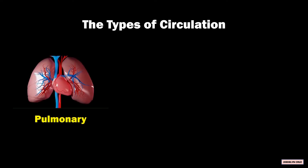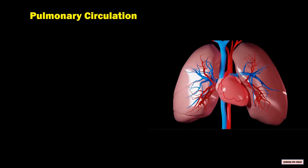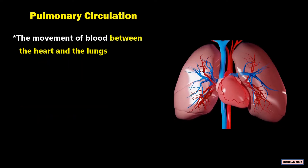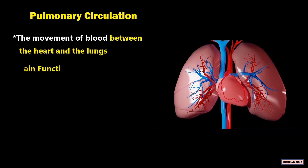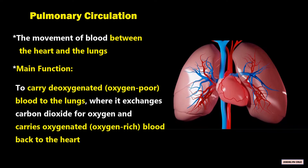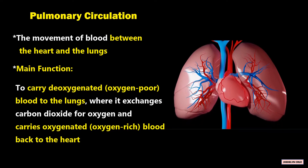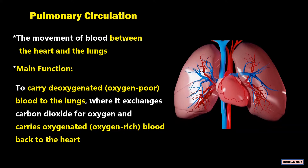There are three types of circulation. The first is pulmonary circulation, which is the movement of blood between the heart and the lungs. The main function of this circulation is to carry the deoxygenated or oxygen-poor blood to the lungs, where it exchanges carbon dioxide for oxygen, and carries oxygenated or oxygen-rich blood back to the heart.